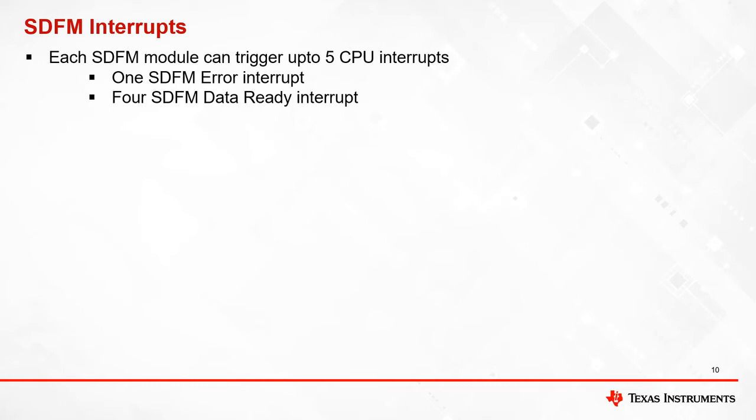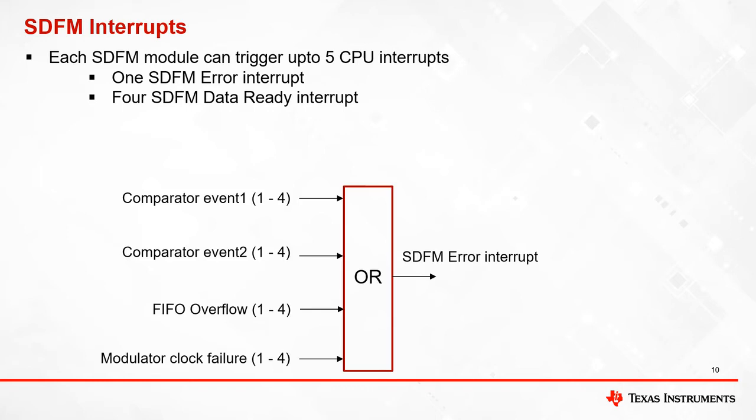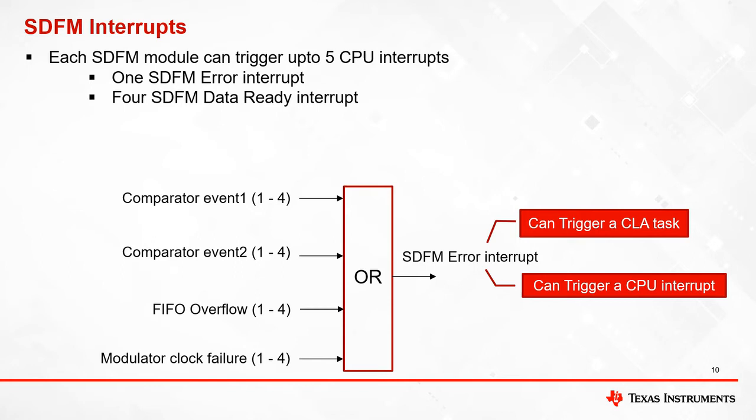Each SDFM module can generate up to 5 CPU interrupts. One CPU interrupt is called the SDFM error interrupt and the other 4 CPU interrupts are data ready interrupts from filter channels. Comparator event 1, event 2, FIFO overflow, and modulator clock failure events from any of the 4 filter channels can trigger the SDFM error interrupt. This interrupt can trigger a CLA task or CPU interrupt.